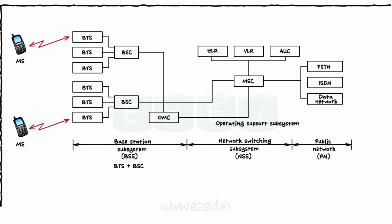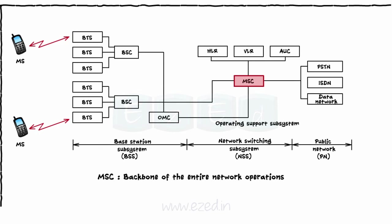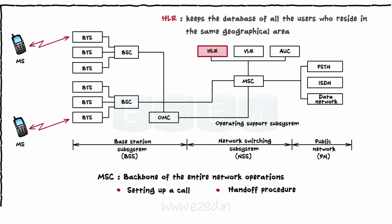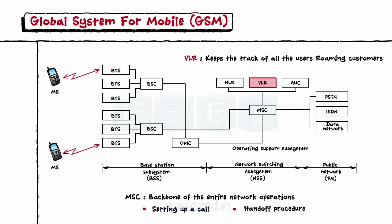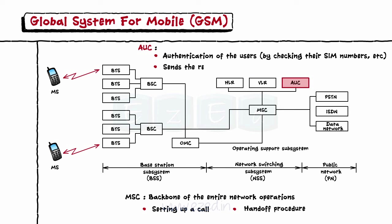The network and switching subsystem (NSS) mainly contains the MSC, which is the backbone of the entire network and controls all operations from setting up a call to the handoff procedure. Other blocks of NSS include HLR, home location register, which keeps the database of all users residing in the same geographical area; VLR, visitor location register, which tracks users who are visitors to that area, mainly roaming customers; and AUC, authentication center, which controls user authentication by checking SIM numbers and sends required information to the MSC.